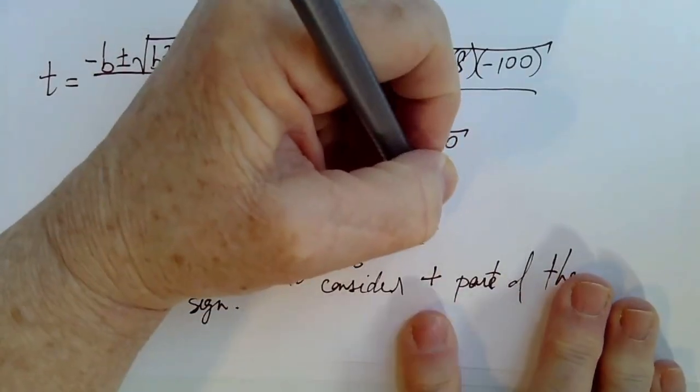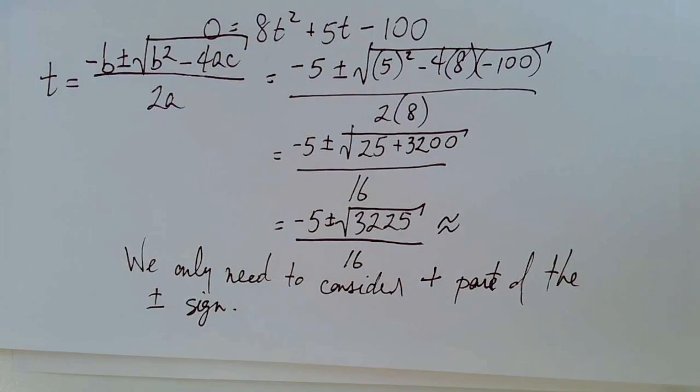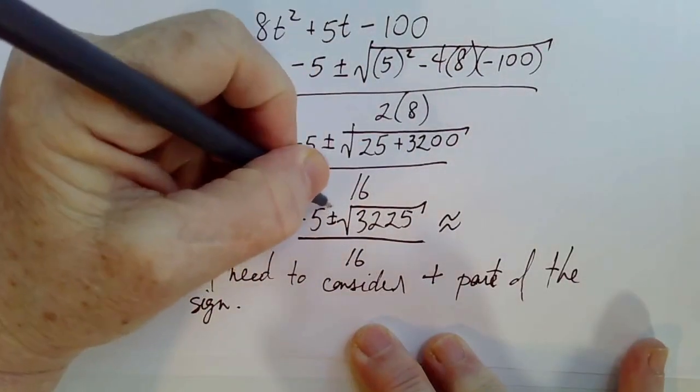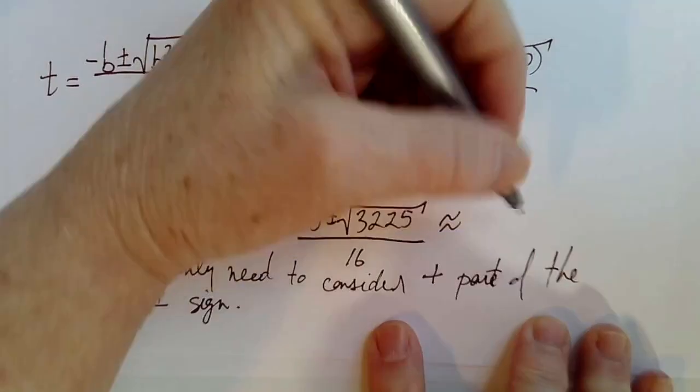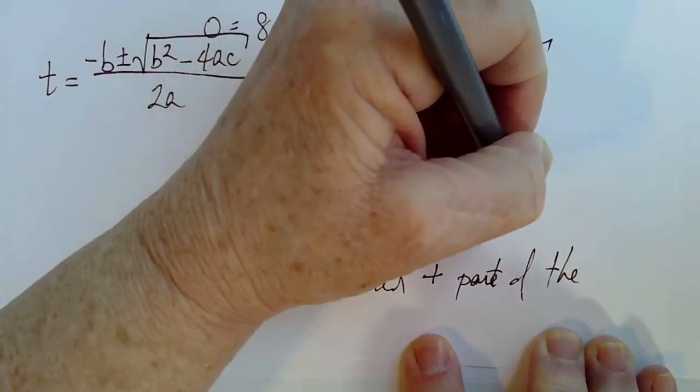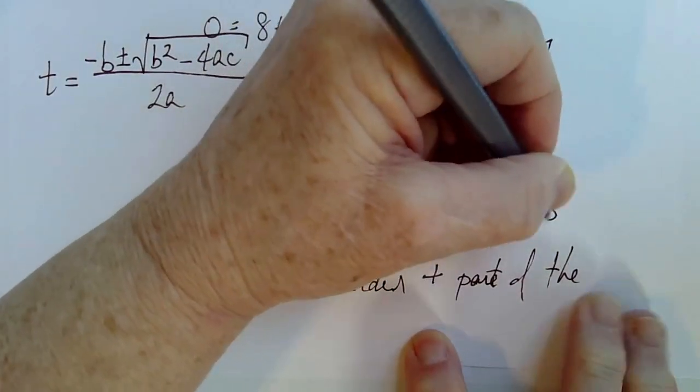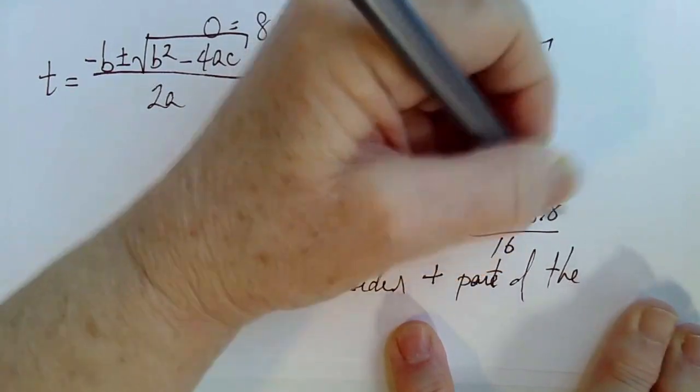So this is approximately, and I'm only looking at this plus sign now. Only considering the plus sign. Negative 5 plus 58.8 divided by 16.